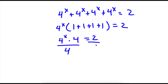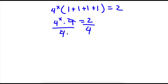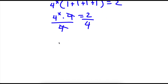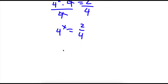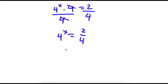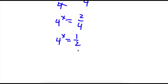Now I'm going to divide both sides by 4, so these two will cancel out. I'll be left with 4 to the power of x is equal to 2 over 4. 2 over 4 simplifies to 1 half. So I have 4 to the power of x is equal to 1 half.